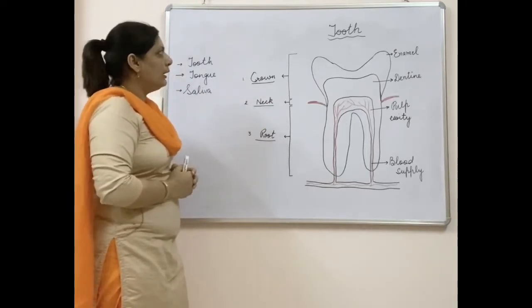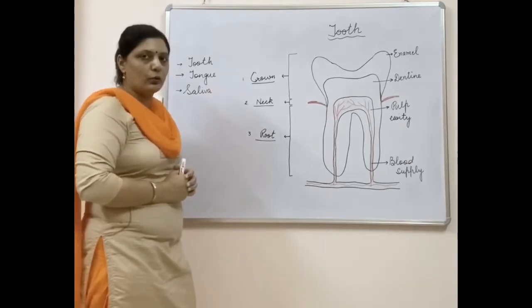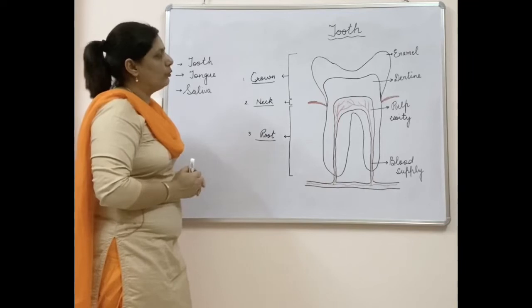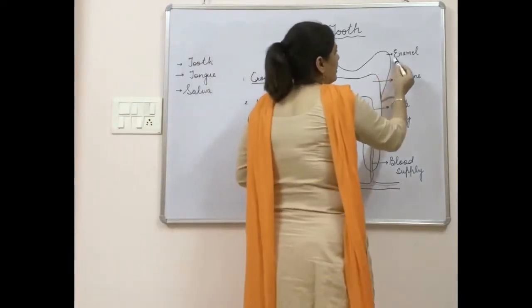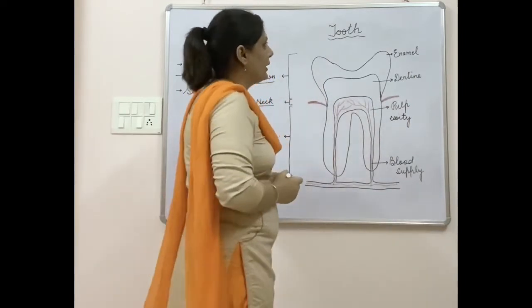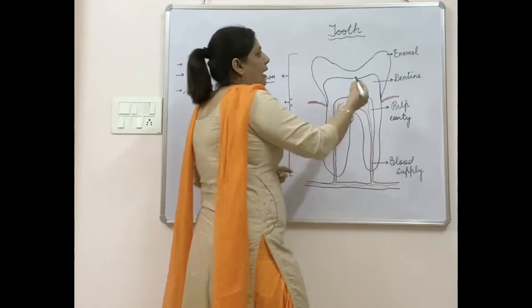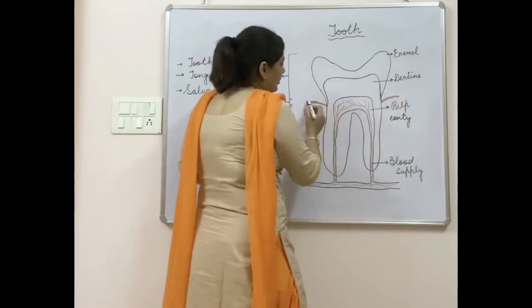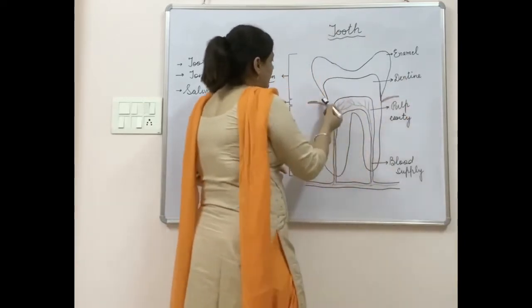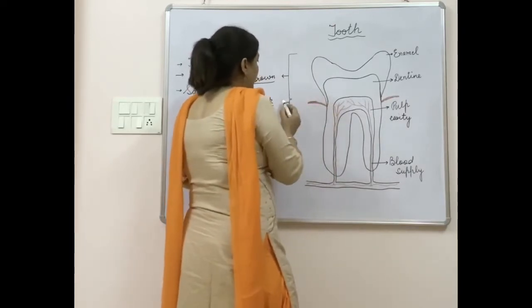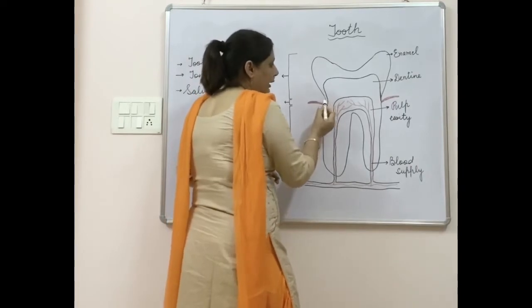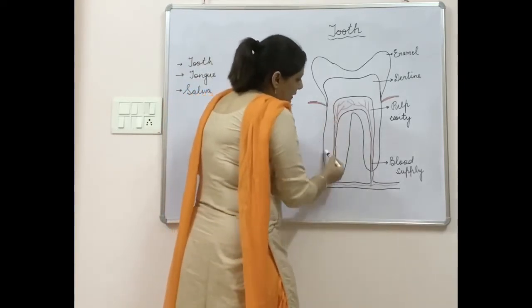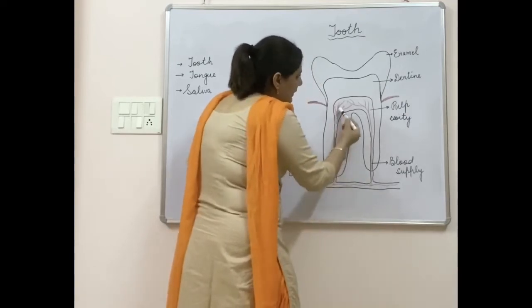Each tooth has all three parts: crown, neck, and root. Looking at the structure in detail, the outer white part visible to us is called enamel. The crown is just above the gums, the neck is embedded in the gums, and the root is inside the jaw.